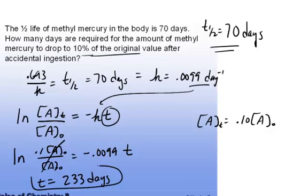Okay, now does that make sense? I think so, because you'd be down to 50% after 70 days. Another half-life would get you to 25%. Another half-life, which would be 210 days, would get you to 12.5%. And so 10% at 233 days sounds reasonable.